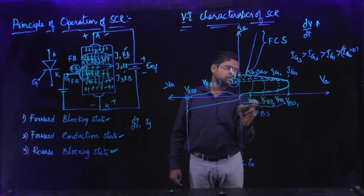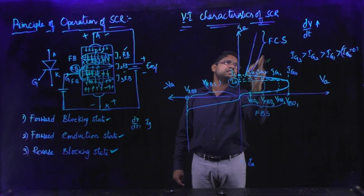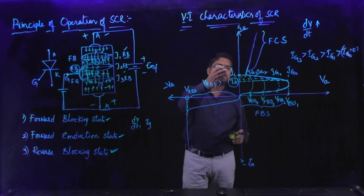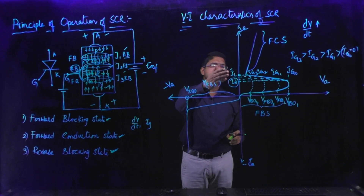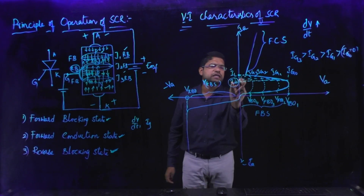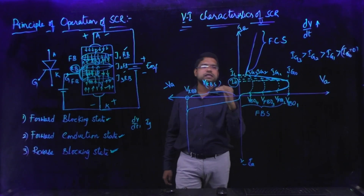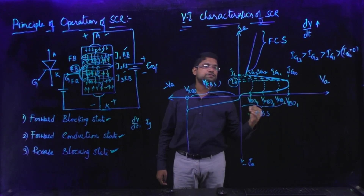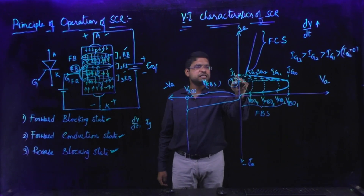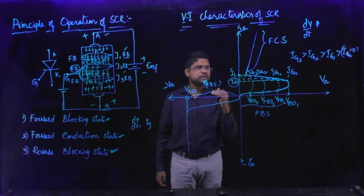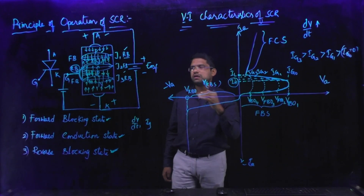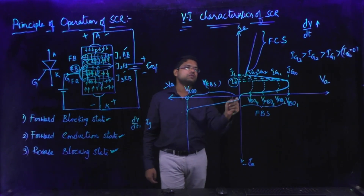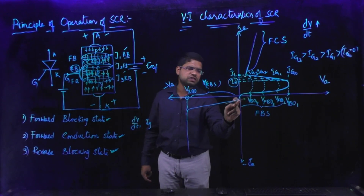This all happens during forward bias condition of SCR. This region is called the forward blocking state and this region is called the forward conduction state. Here two currents appear: latching current and holding current. Holding current is the minimum anode current below which the SCR is turned off. Latching current is the minimum anode current which keeps the device in the on state even after removal of the gate signal.